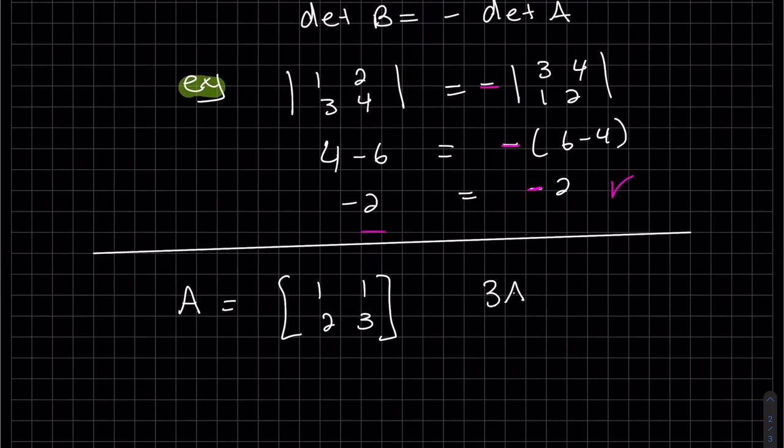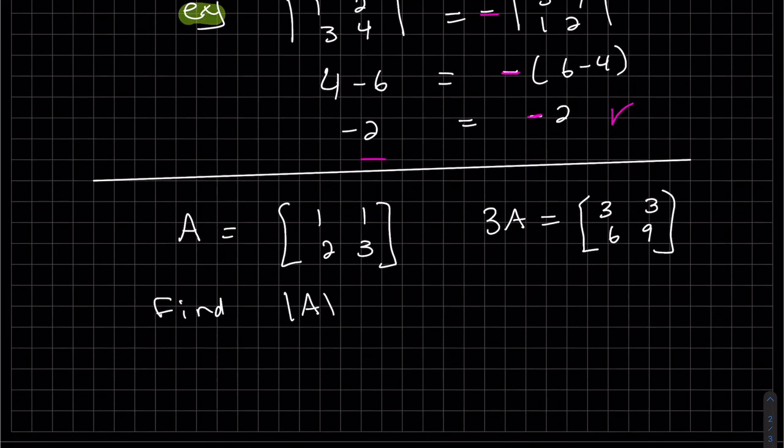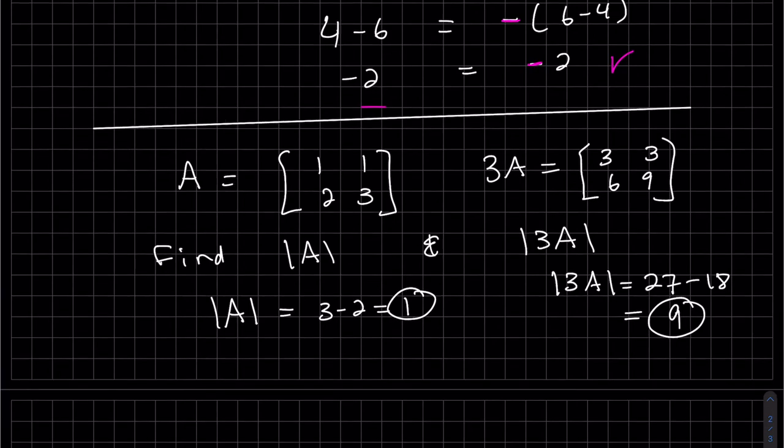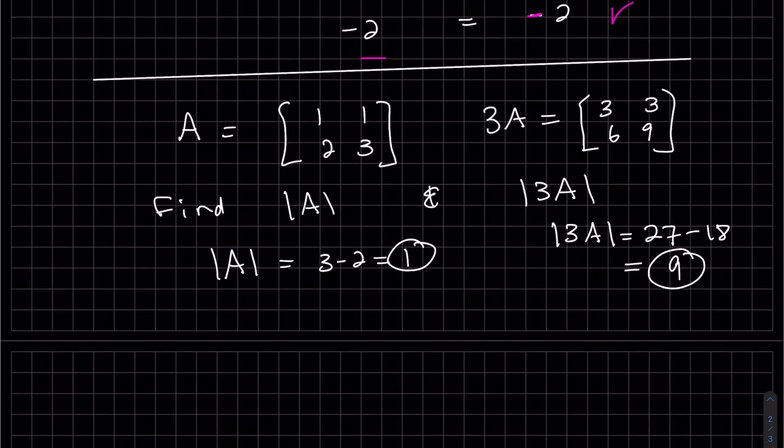Let's find three A. So when I multiply three by A, it's the matrix. Everything gets multiplied by three. So we got nine. Again, we multiplied three by the matrix. And that's how you multiply. Remember, it goes to every single component.